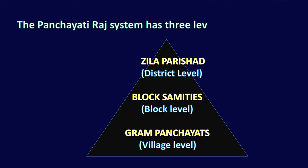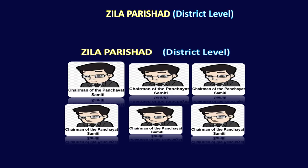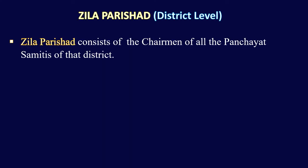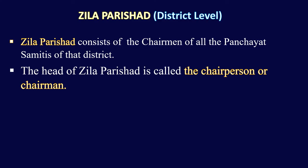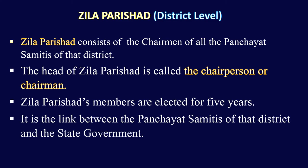The uppermost level of Panchayati Raj is Jila Parishat at district level. The Jila Parishat consists of the chairmen of all the Panchayat Samitis of that district. It is the link between the Panchayat Samiti and the state government. The head of the Jila Parishat is the Chairperson, and its members are elected for five years.